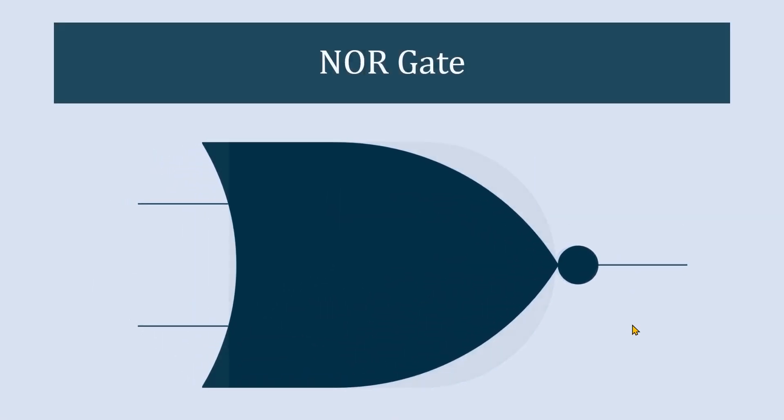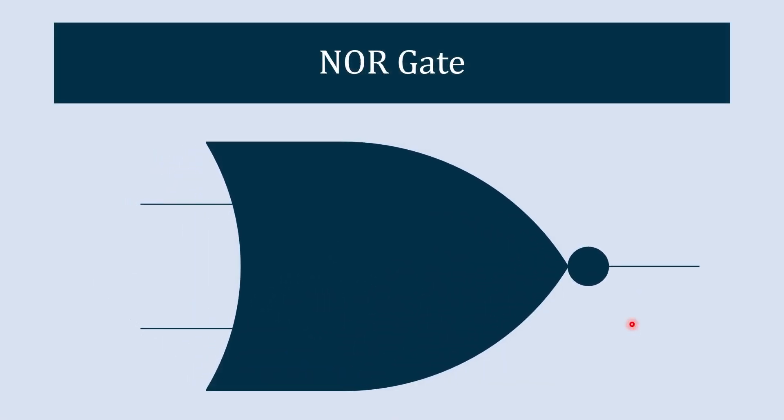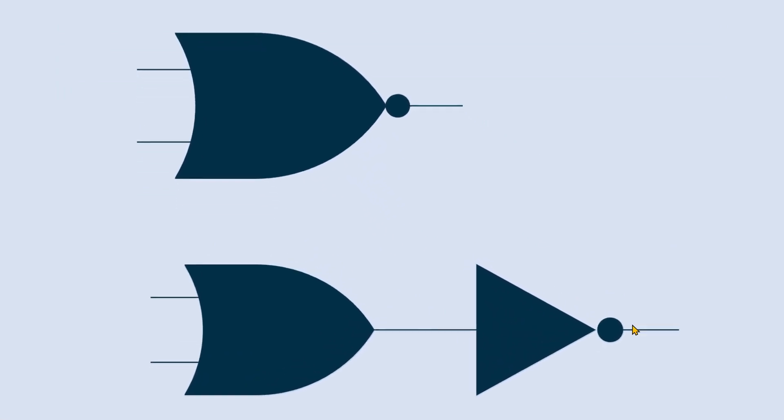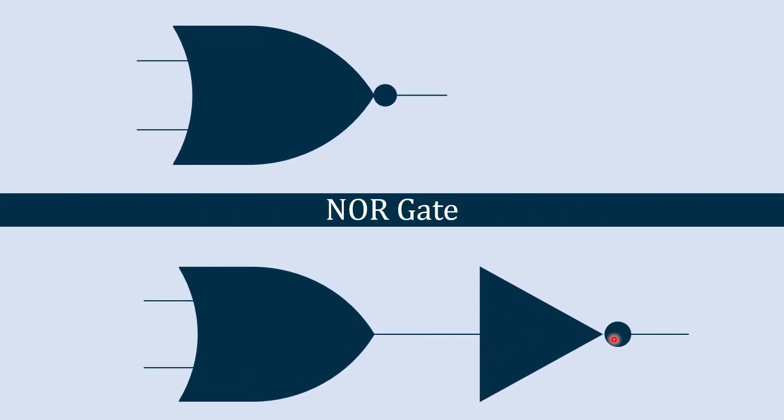Now we are going to explore another universal gate and that is NOR gate. The NOR gate is made up of two basic gates: OR gate and NOT gate. We'll see its truth table and understand its function now.